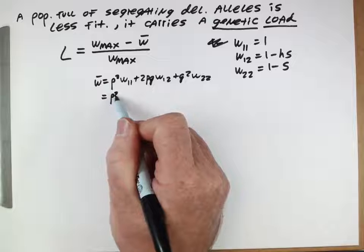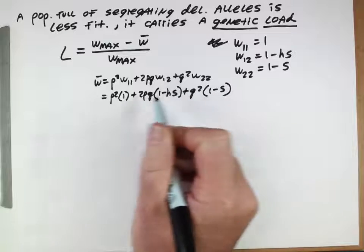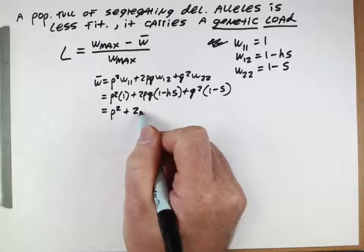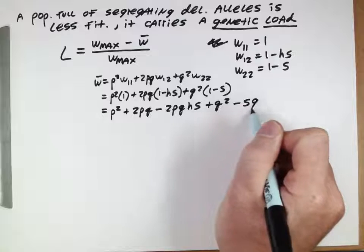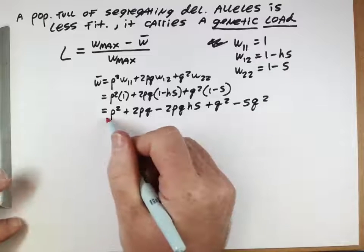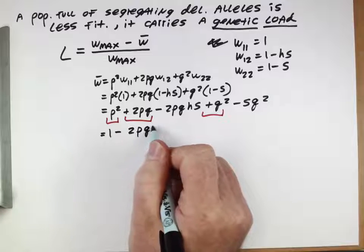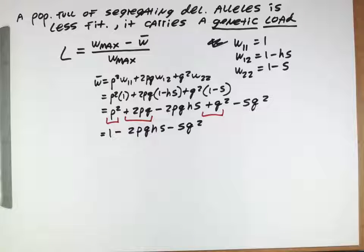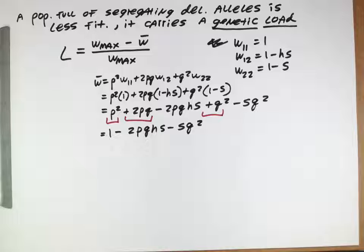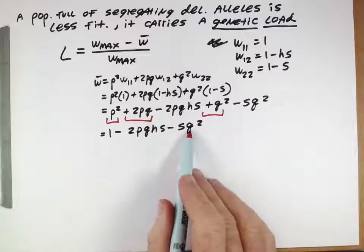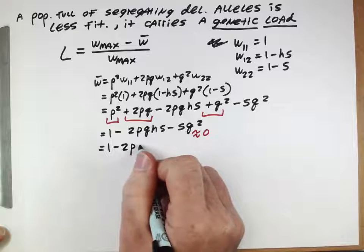And we can substitute these in, so p squared times 1, 2pq times 1 minus hs, plus q squared 1 minus s. And we can simplify because we have p squared and 2pq and q squared which add up to 1. So we get 1 minus 2pq hs minus sq squared. And we can do another one of these approximations because we have two terms here. This term has the q. Remember q is going to be small because that's representing the frequency of the deleterious allele. So this last term is going to be much smaller than this term, so we'll approximate that as zero and neglect that last term.